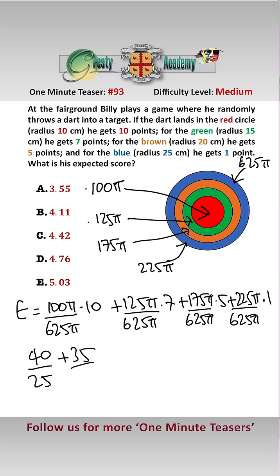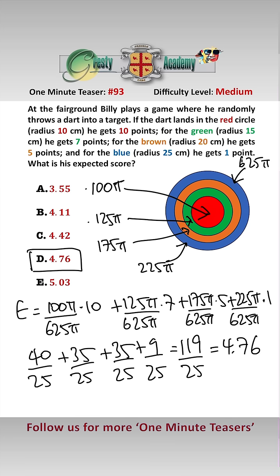Simplifying this we get 40 over 25, add 35 over 25, add 35 over 25, add 9 over 25, which equals 119 over 25, which is 4.76. So his expected score is D, 4.76.